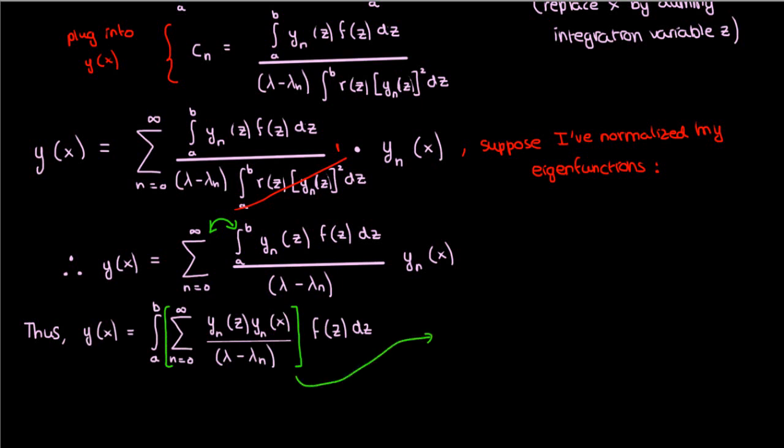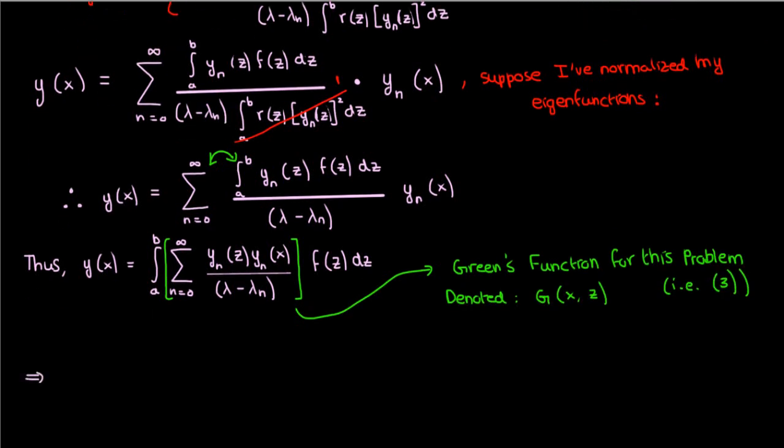This quantity in the square brackets here is a function of both x and the dummy variable z. In fact, it's got a special name, it's called the Green's function for this problem, which I'll denote as g.